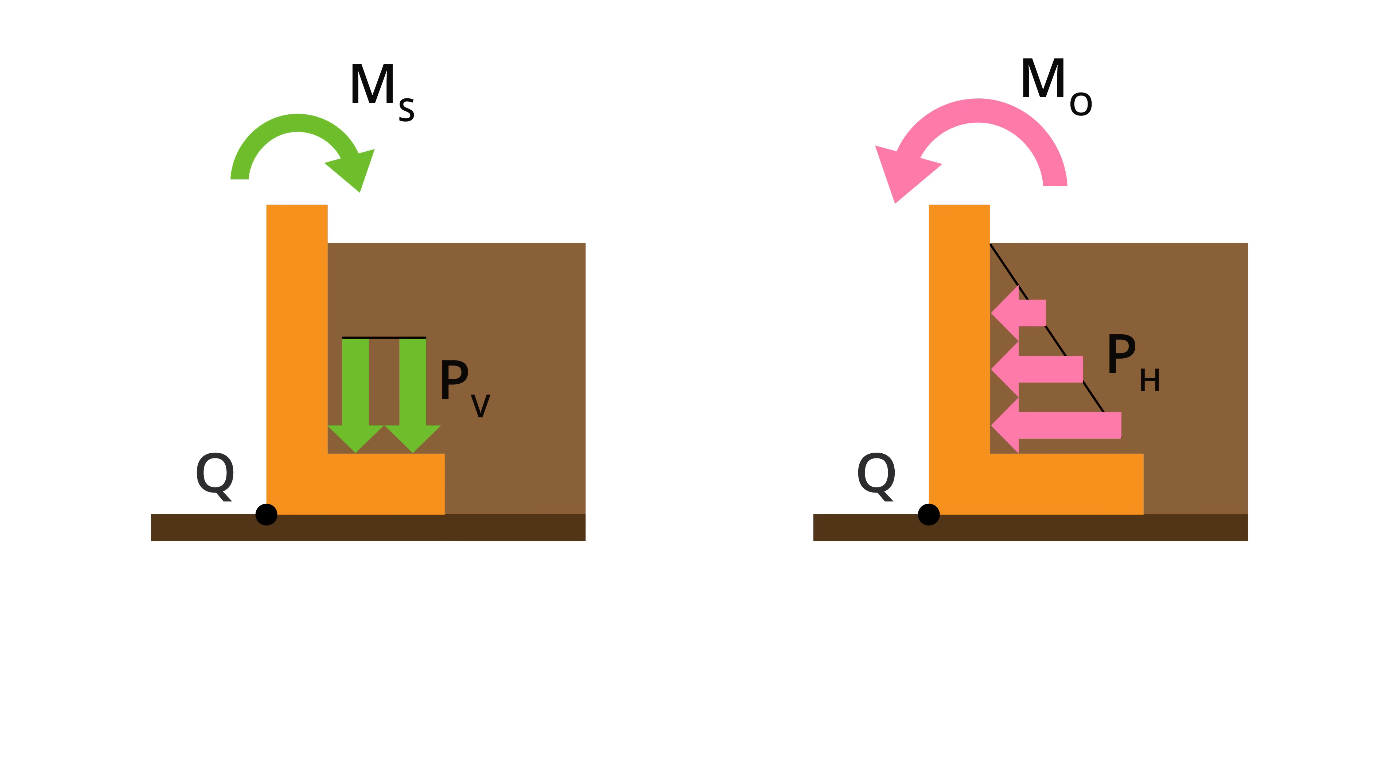Next, they figure out the stabilizing moment, MS, produced by the soil pushing downwards on the horizontal leg of the wall. Lastly, they make sure that the horizontal leg is long enough that the stabilizing moment is at least as large as the overturning moment. Then the retaining wall will be stable.